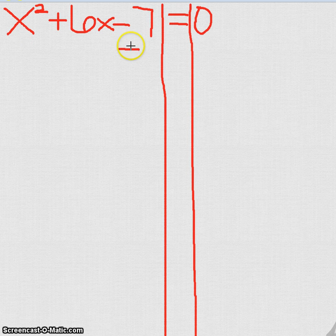I'm going to add 7 to both sides. I'll bring down the rest of my equation, so it's going to be x² plus 6x.